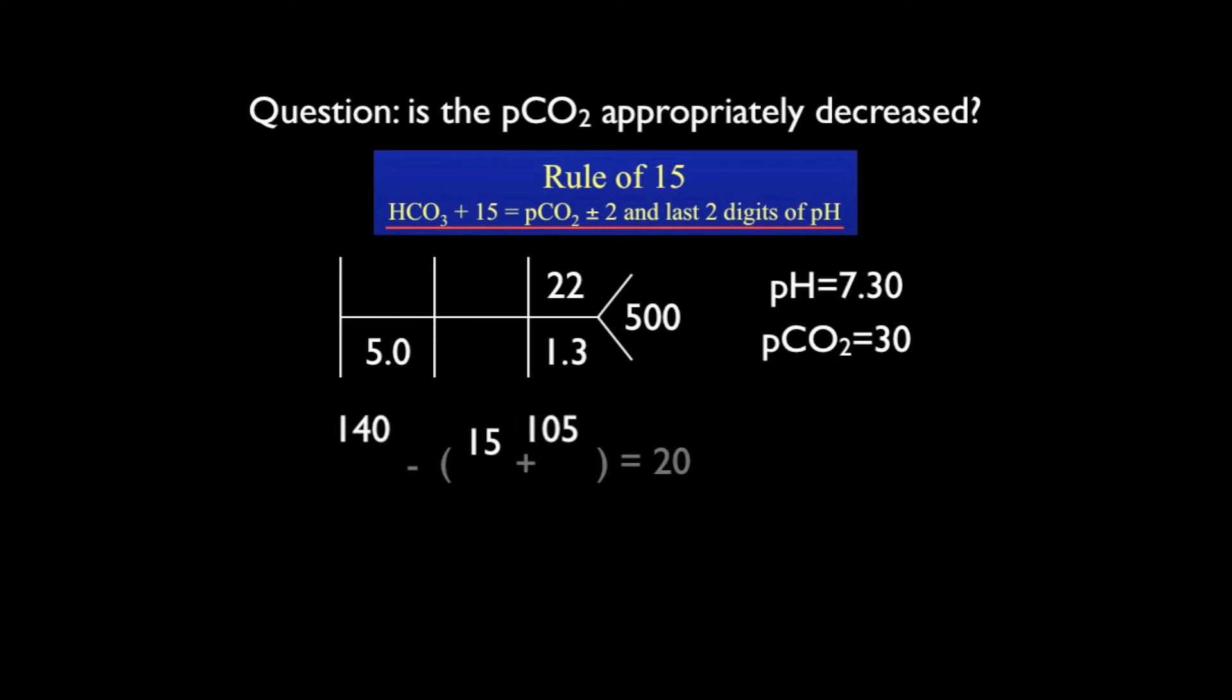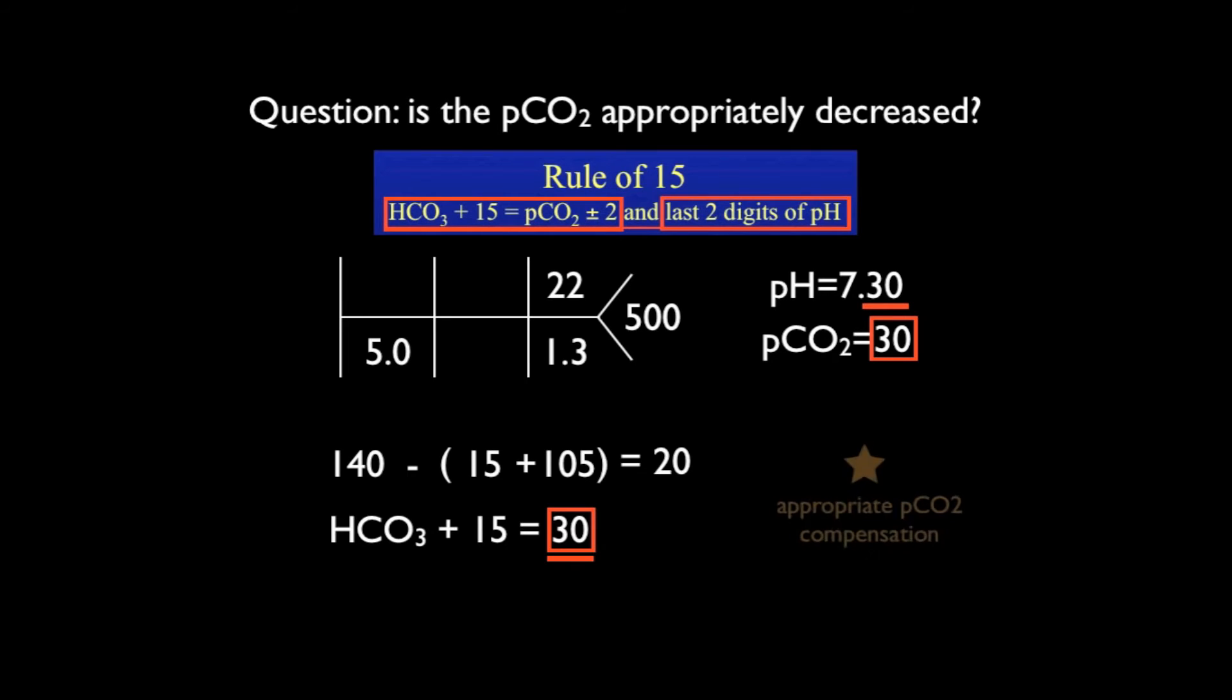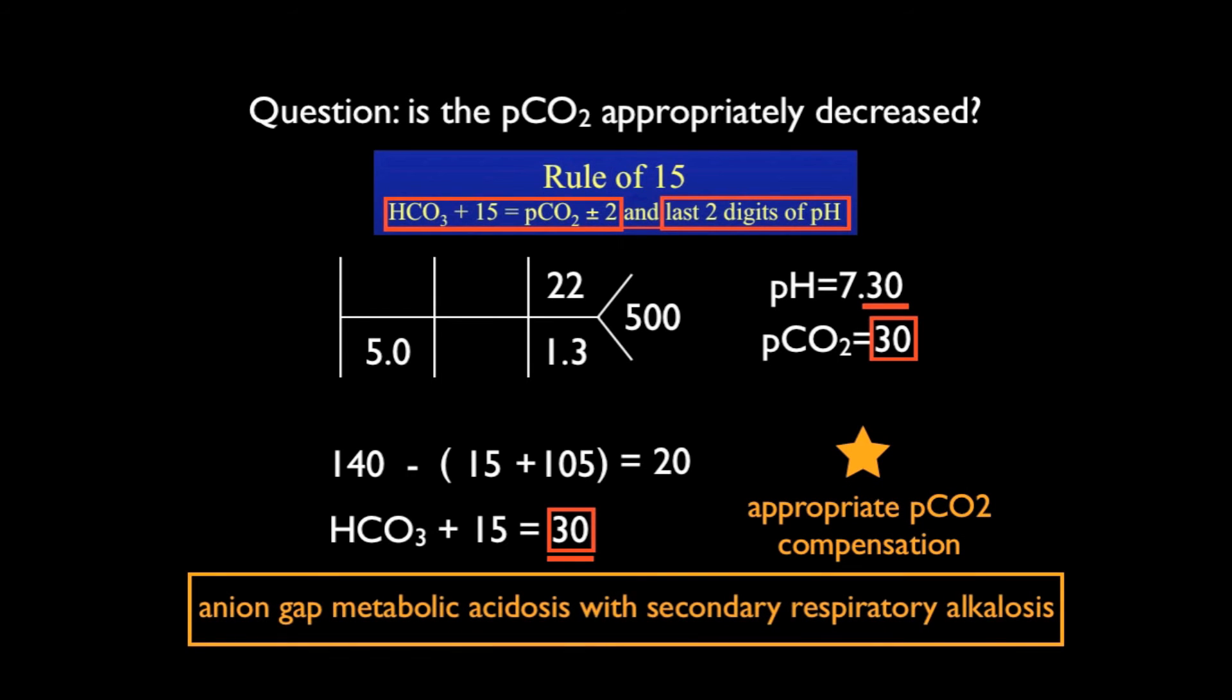Here's a patient with the following BMP. Anion gap is measured and we take the rule of 15 and apply it and we find that 30 is the expected PCO2 and that is the number that it is on the venous blood gas. We also look at the pH and the last two digits are 3 and 0, which the rule also predicts. So this is just appropriate PCO2 compensation. An anion gap metabolic acidosis with secondary respiratory alkalosis.